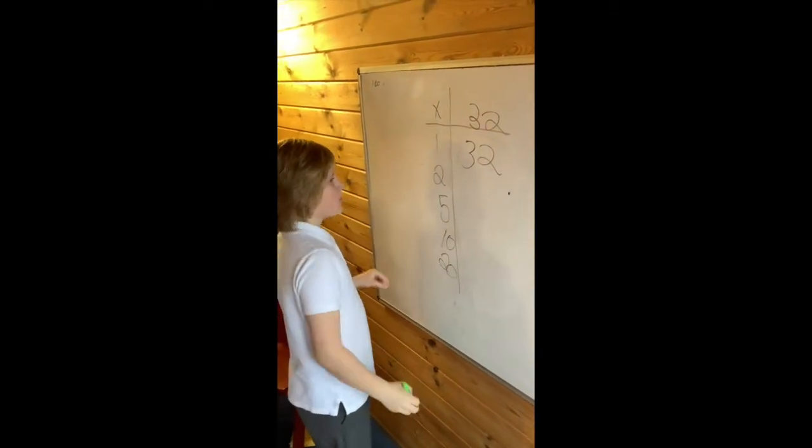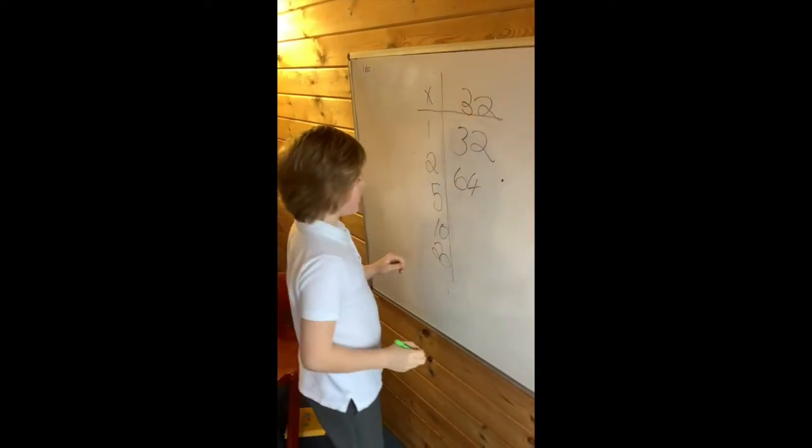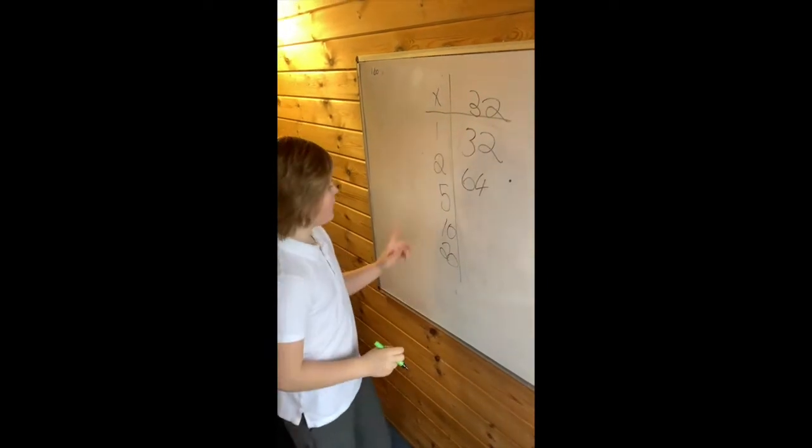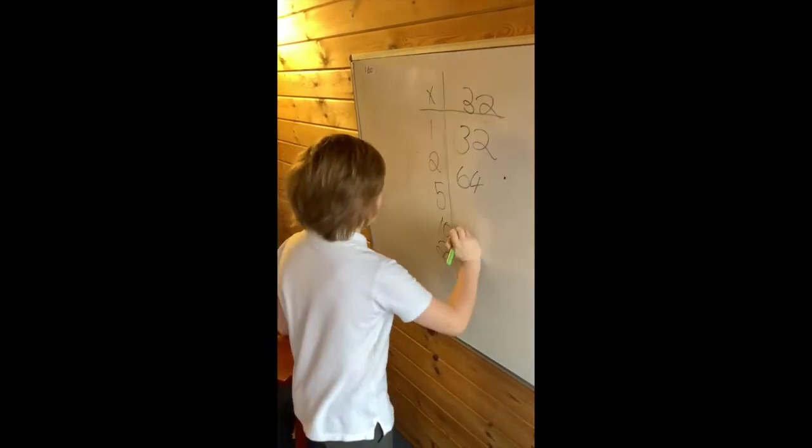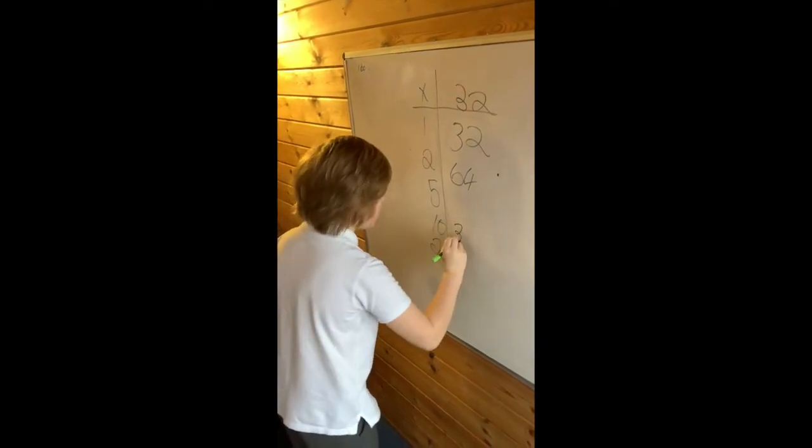Then you want to double 32, which makes 64. Then you're going to skip the 5 to go to the 10, and you're going to add a 0 onto the end of 32, so 320.